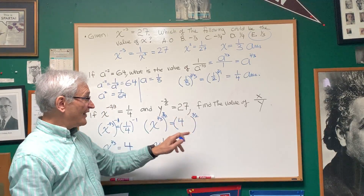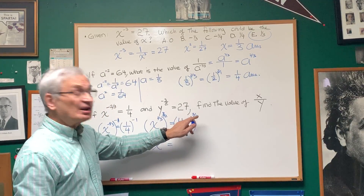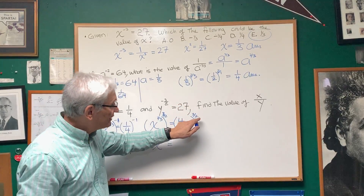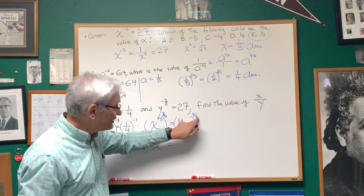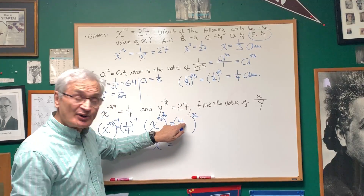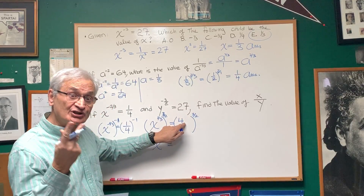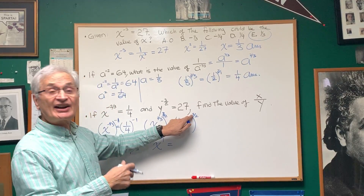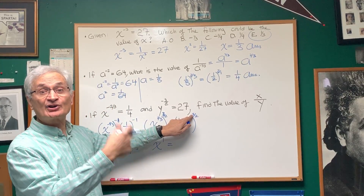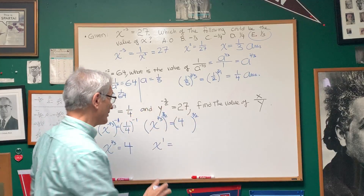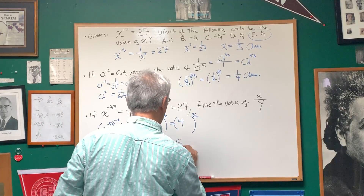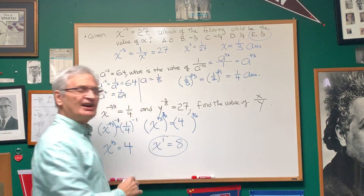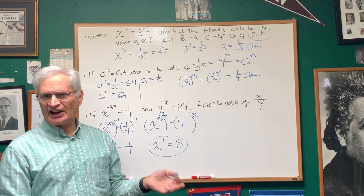Let's raise both sides of the equation to the three halves power, because two thirds times three halves is equal to one. Four to the three halves power: the denominator two says take the square root of four, which is two; the numerator says take that to the third power, and two to the third power is eight. So we have X is equal to eight.